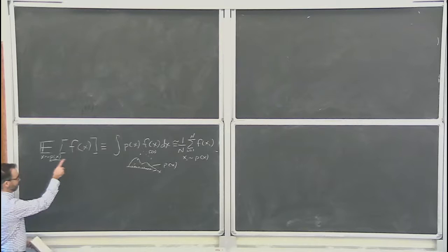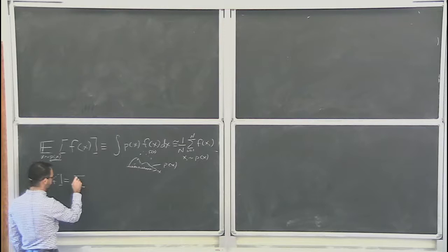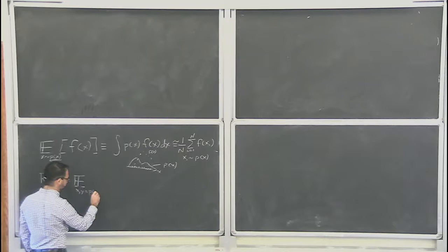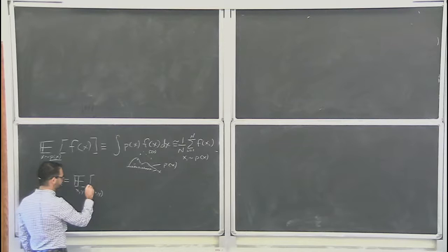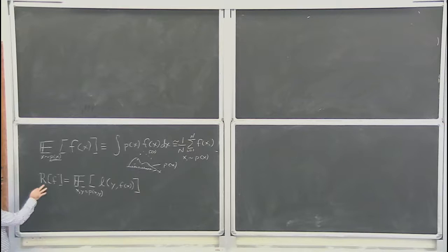As some general notation: when Gilles wrote the risk for some function f, it was an expectation of both x and y drawn from a joint distribution, with a loss function of y and f(x). This is the expected risk. The joint distribution of x and y describes them simultaneously.